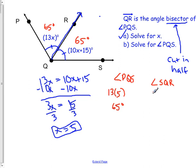We go 10 times 5 plus 15. And that's going to give us 50 plus 15, which is indeed 65. So we did do it right.